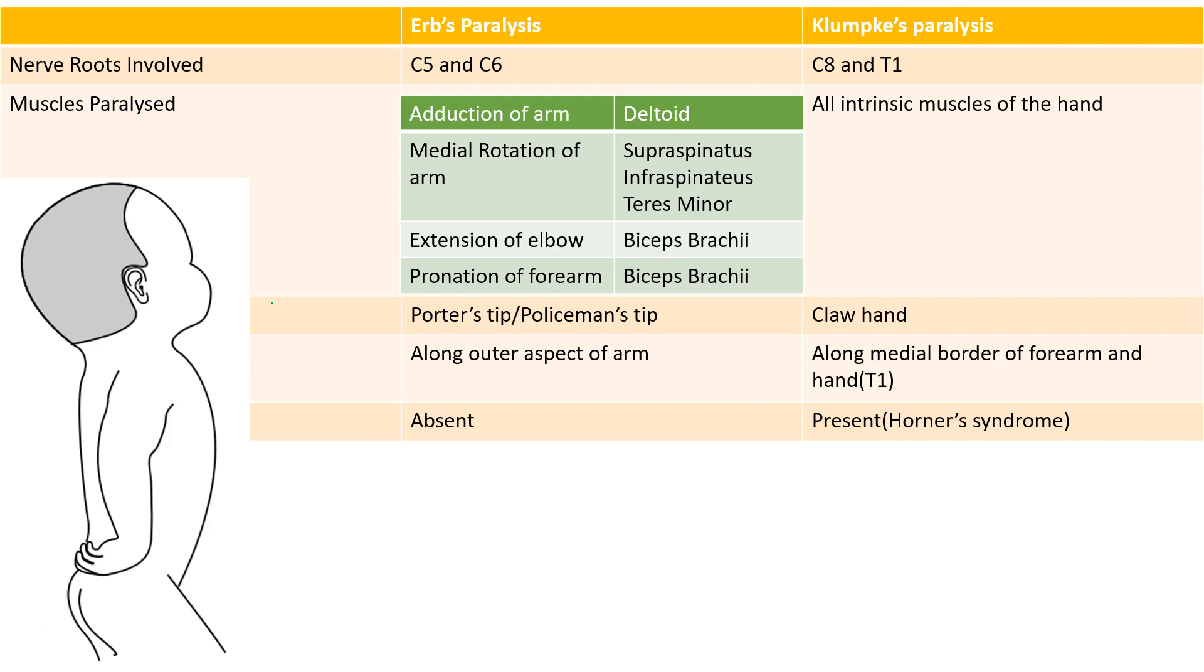Or it can also occur when there is excessive increase in the angle between the head and the shoulder. For example, fall from the back of the horse and landing on the shoulder. So, here, there is a typical deformity called as policeman's tip or porter's tip.